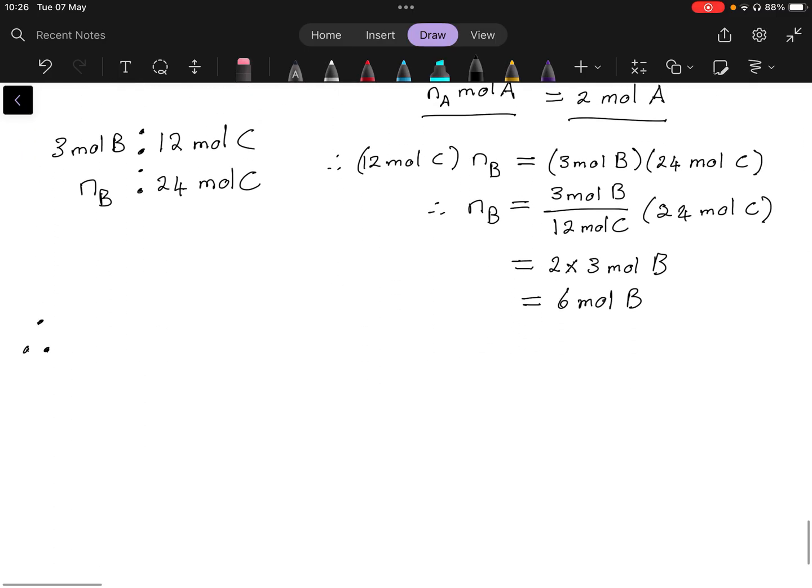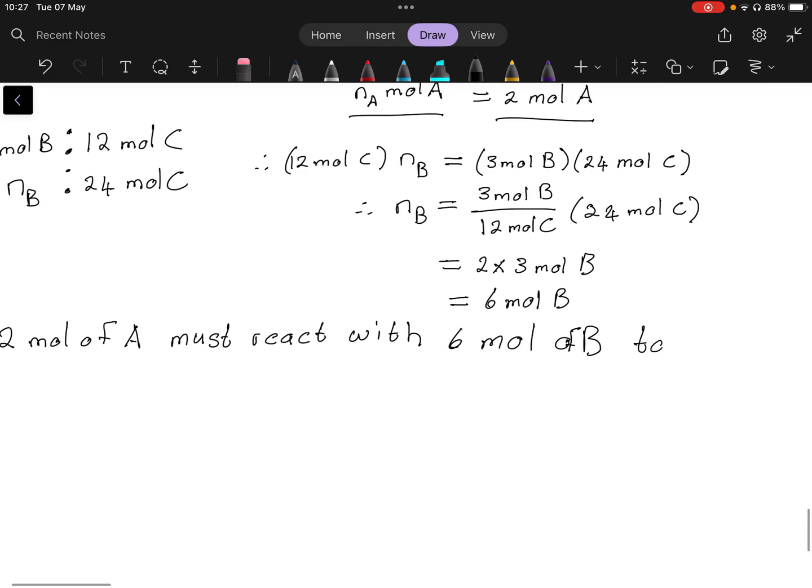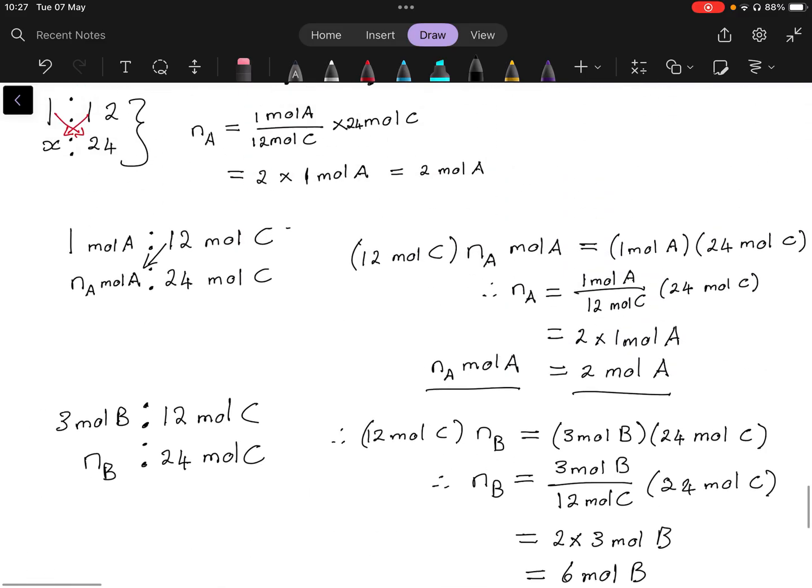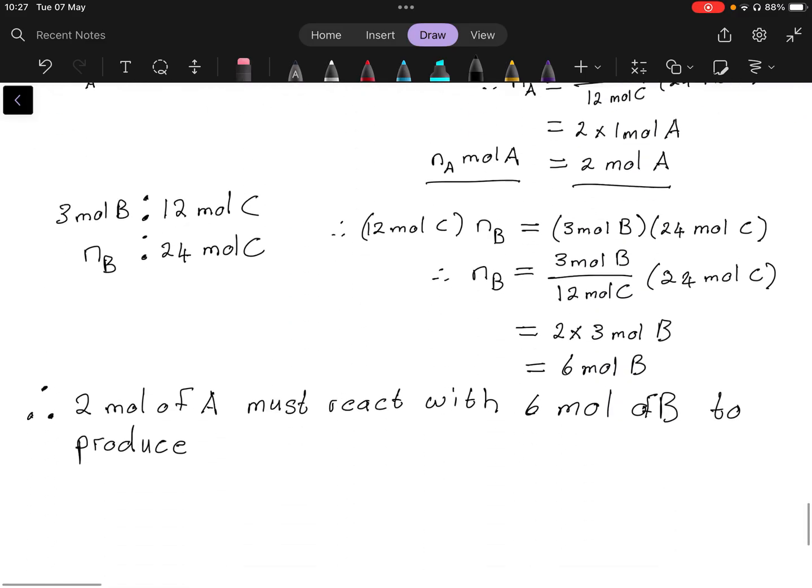Therefore 2 mole, you need 6 mole of A must react with six mole of B, of B, of B to produce 24 mole of C.